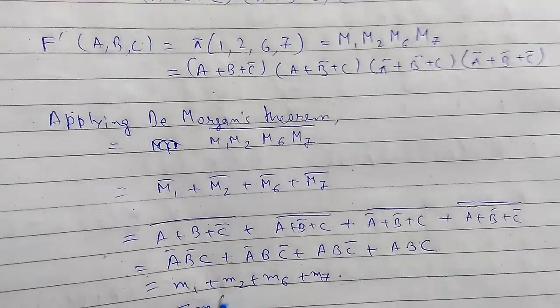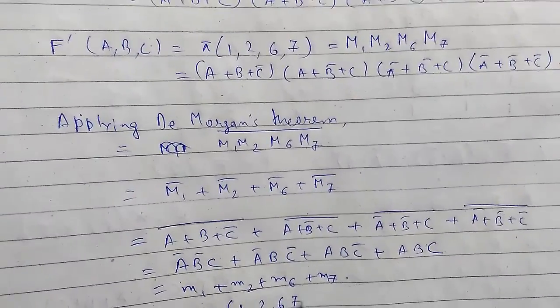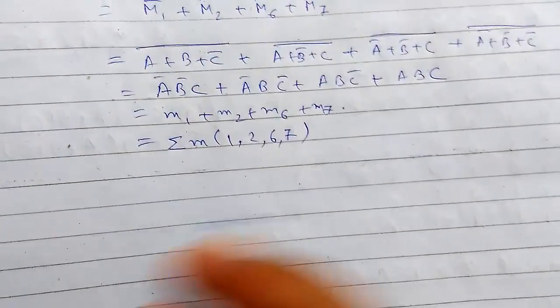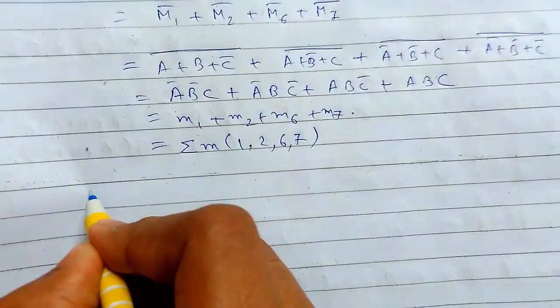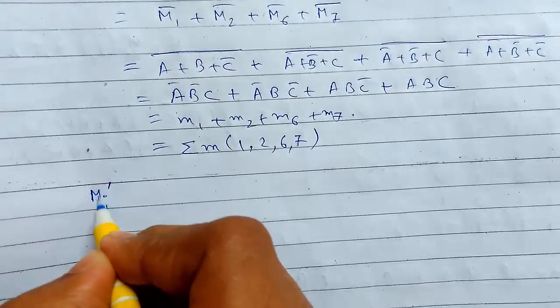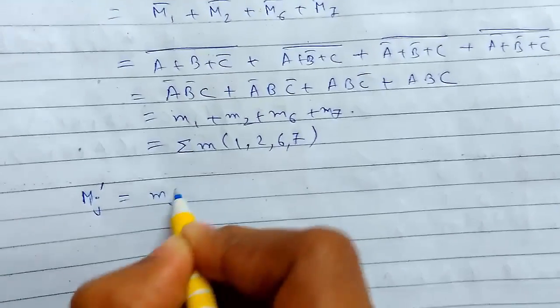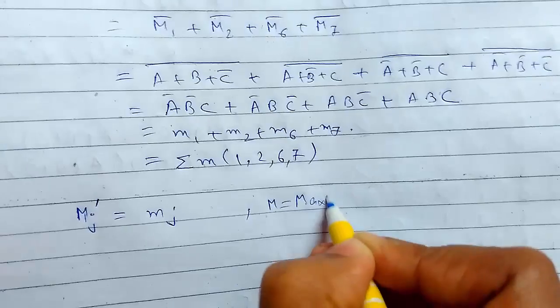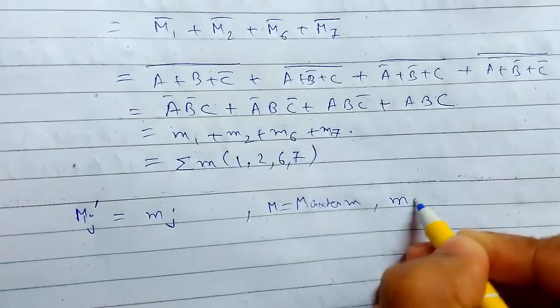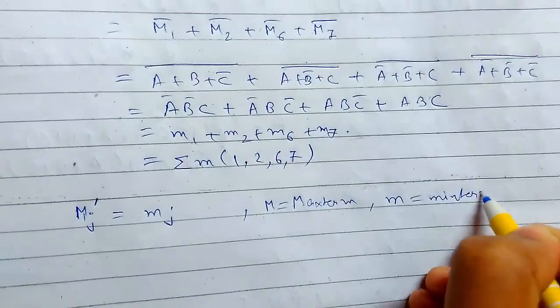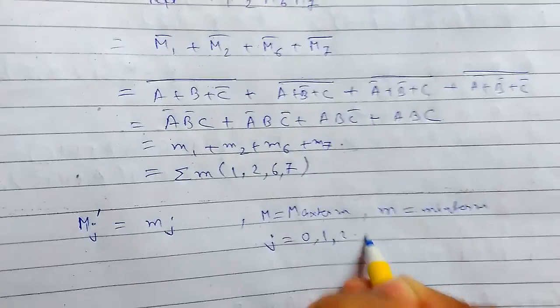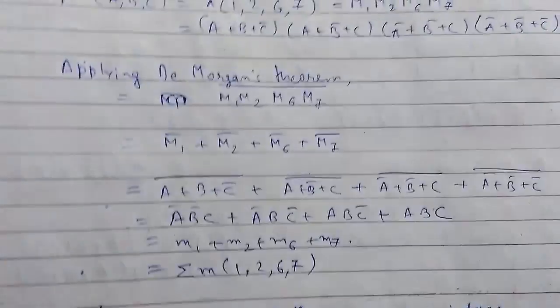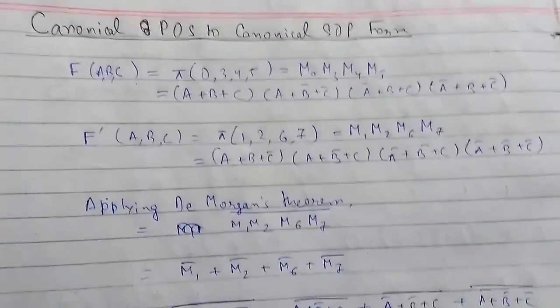Now we will see the general statement or formula for it. This is Mj bar - the max term here, and this is the min term. M is the max term, small m is the min term. J here is from 0, 1, 2 up till 2 to the power n minus 1. This is how you do it. Thanks for watching.